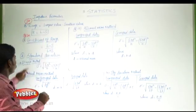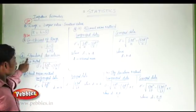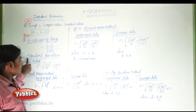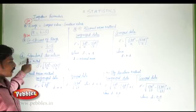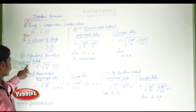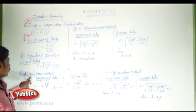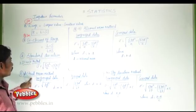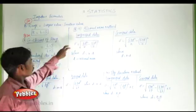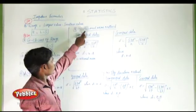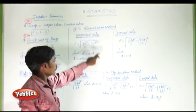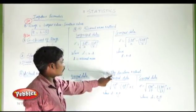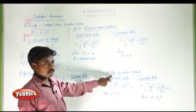Standard deviation is divided into four types: one is the direct method, another one is the actual mean method, the third one is the assumed mean method, and the fourth one is the step deviation method.